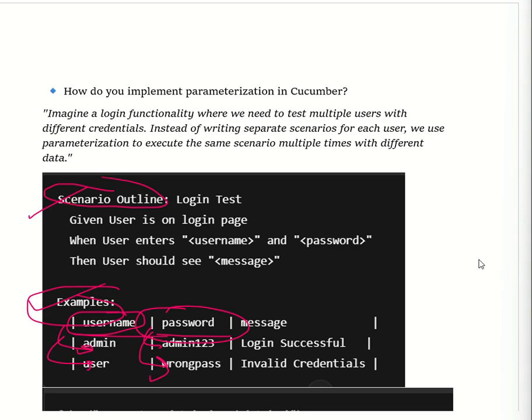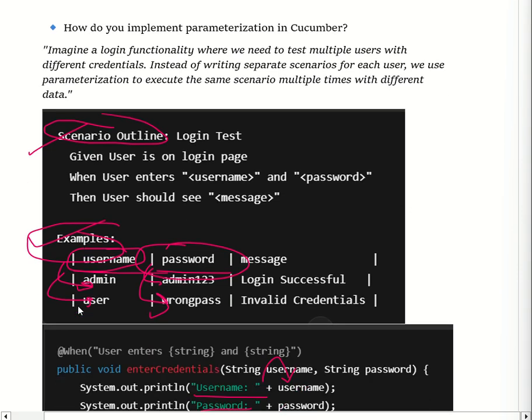There are three ways to pass test data in Cucumber: the first is Scenario Outline, the second is Regular Expressions, and the third is Data Tables. In this question we will see the implementation using Scenario Outline with the Examples keyword. This is the most commonly used method when we want to execute a scenario multiple times with different input. We replace hard-coded values with placeholders inside angular brackets, like username and password.